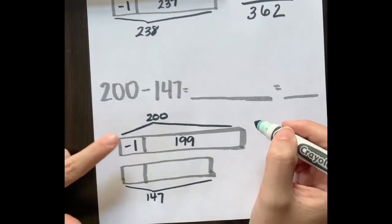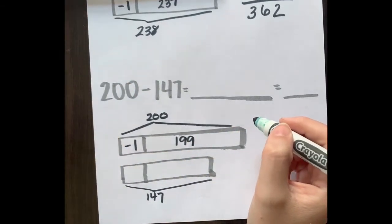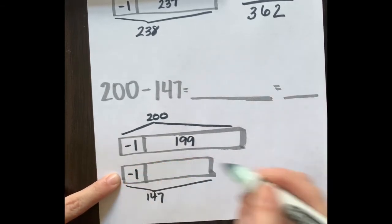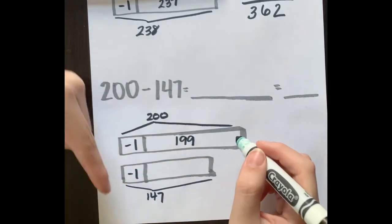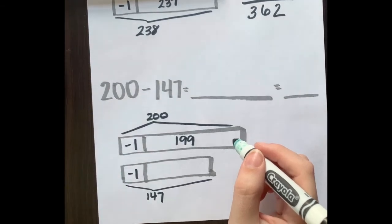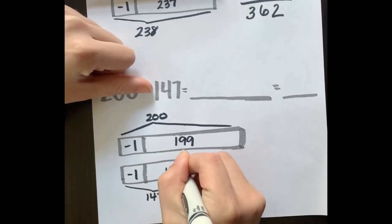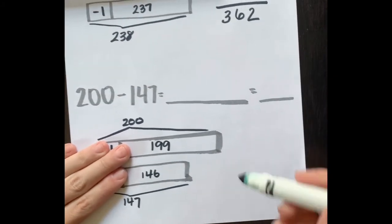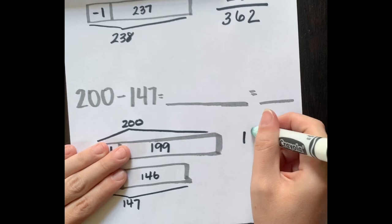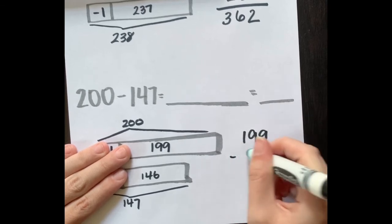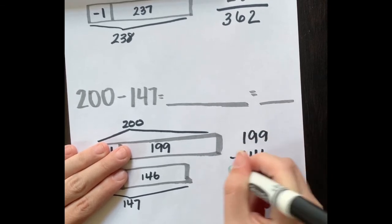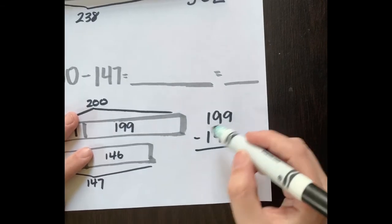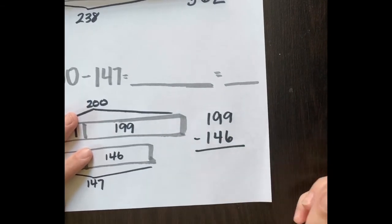Whatever I do to one number I must do to the other. 147 minus one, counting down: 147, 146. I have my new math problem: 199 minus 146. Writing it vertically and solving the ones place: 9 minus 6 is 3.